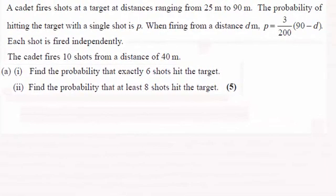Hi there. Now for this question, we're told that a cadet fires shots at a target at distances ranging from 25 metres to 90 metres. The probability of hitting the target with a single shot, P, is given by this formula here, from a distance D metres. Each shot is fired independently. The cadet fires 10 shots from a distance of 40 metres, and we've got to work out these probabilities here.